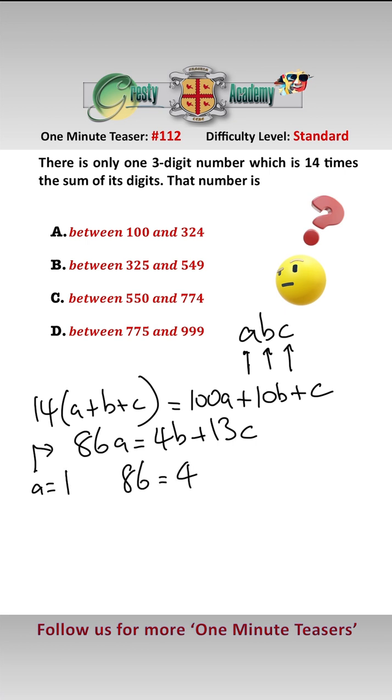Therefore, 86 equals 4B plus 13C. And what we can do is take this equation modulo 13, and that gives us that 8 equals 4B mod 13.